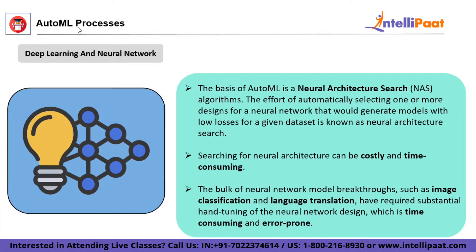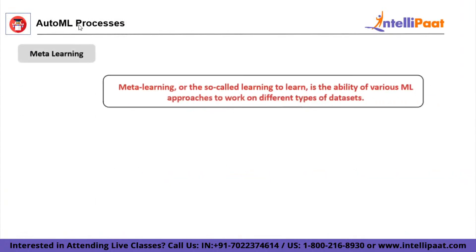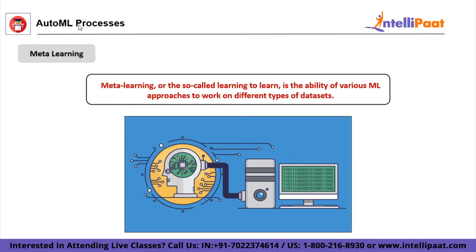Even when compared to the cost of high-end GPUs on public clouds, data scientists still remain more costly than AutoML solutions. Hence, more efforts are being put into the tuning of AutoML software. Another technique AutoML deals with is meta-learning. Meta-learning, or 'learning to learn,' is the ability of various ML approaches to work on different types of datasets, resulting in learning from outputs, being more effective, and conducting new tasks much faster.